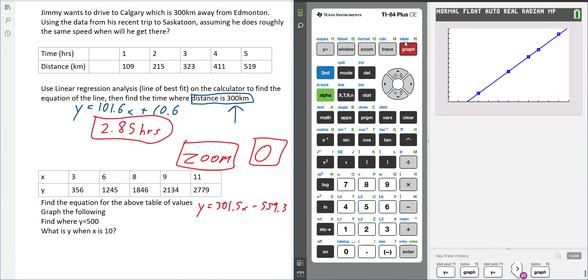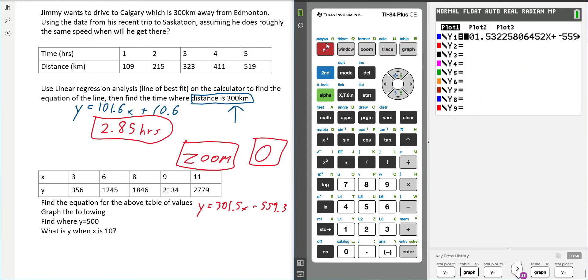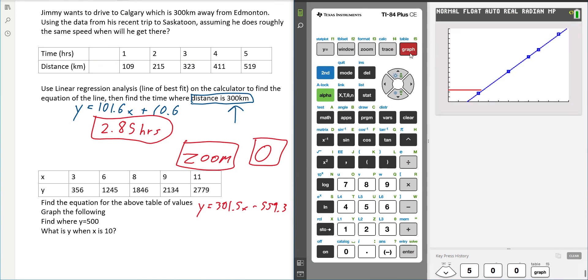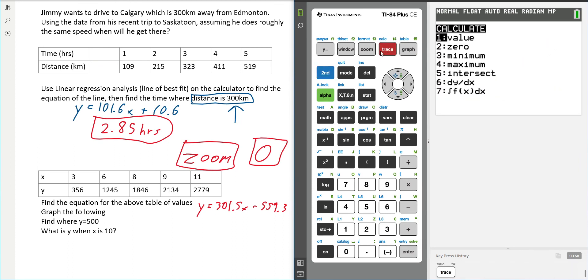Graph the following, so we've done that. Find where y is 500. So just to do that we put y equals 500. We graph. And then we look for the intersect. So we do calc, intersect.